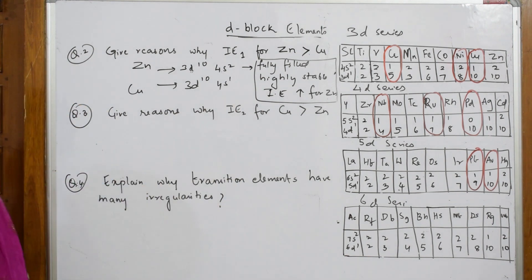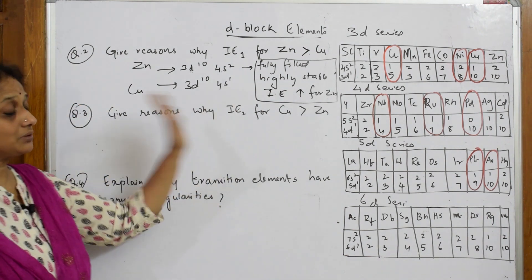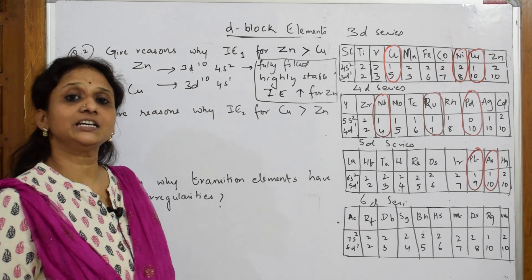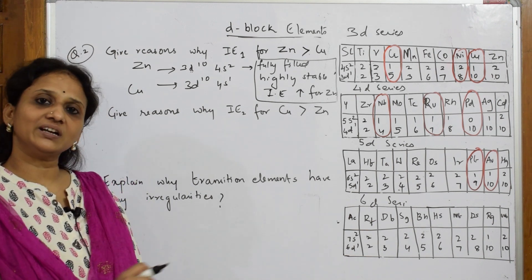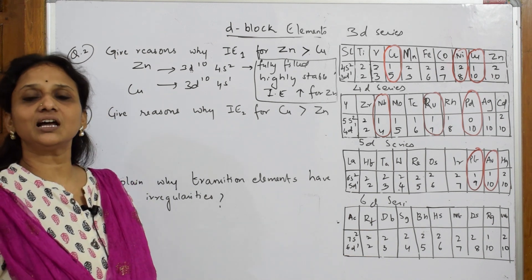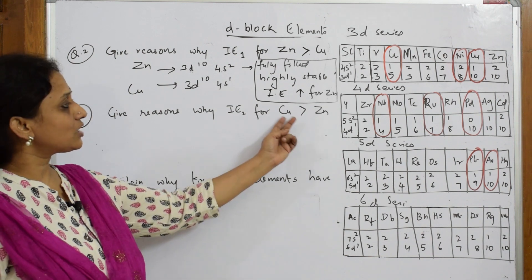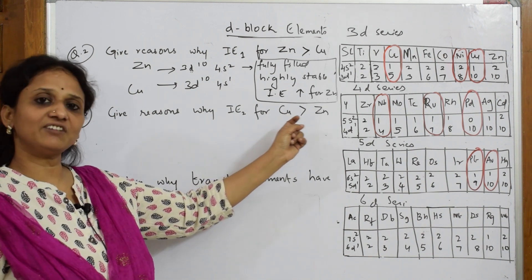Reasoning is nice. Now let me come back and give the same another way. Now we are talking about IE2. When do we call something IE2? When I have already taken out one electron from the valence shell, I call it IE2.